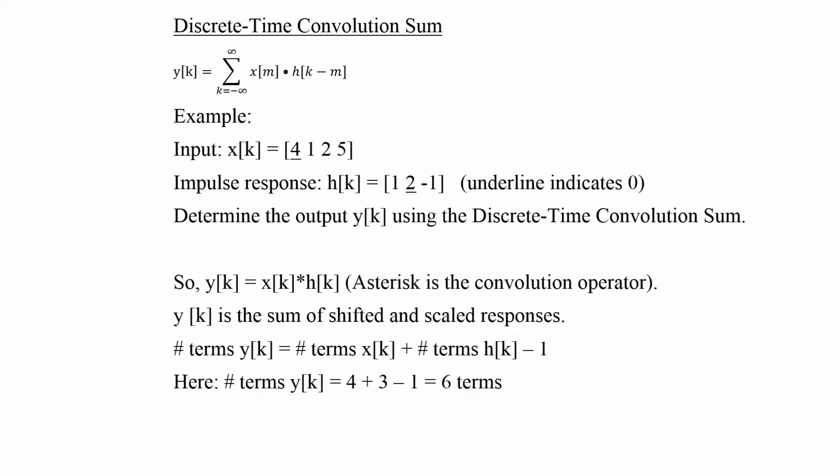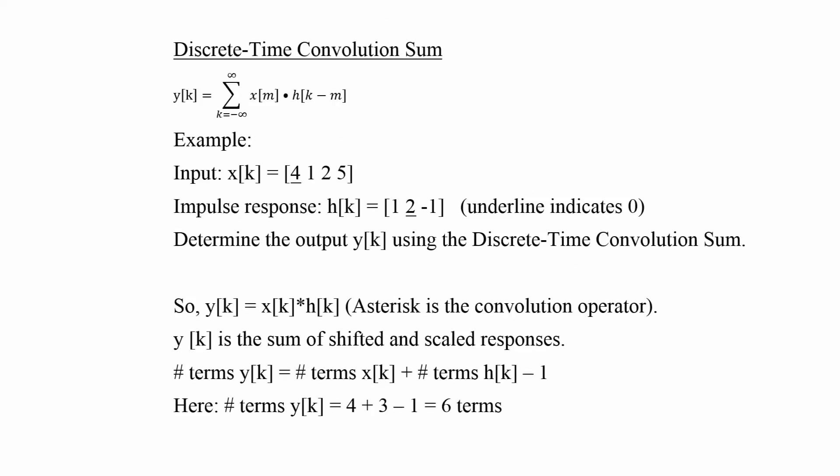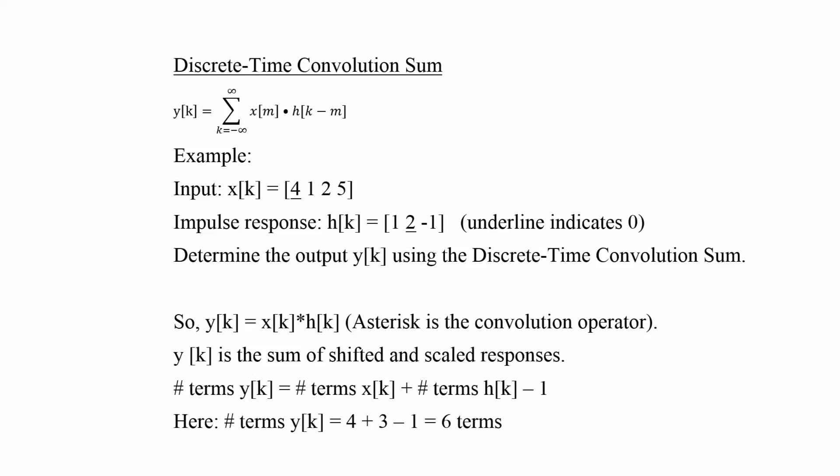And for our convolution sum, we're going to be using this formula here. Y of k is equal to the summation of k equals negative infinity to positive infinity, x of m times h of k minus m. And we're just going to be doing an example problem here to guide you through the convolution sum.